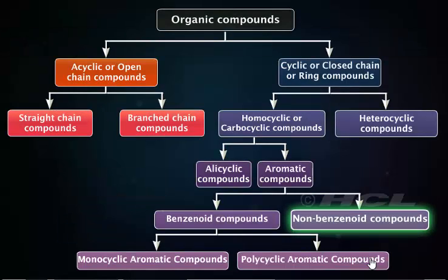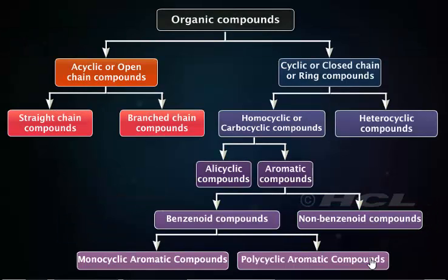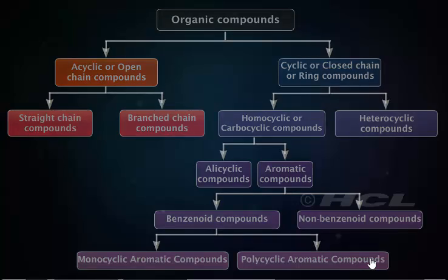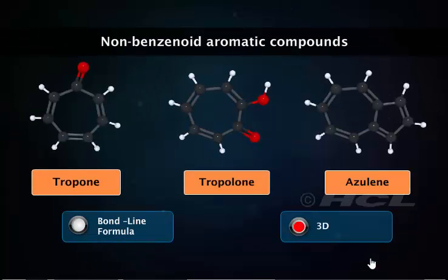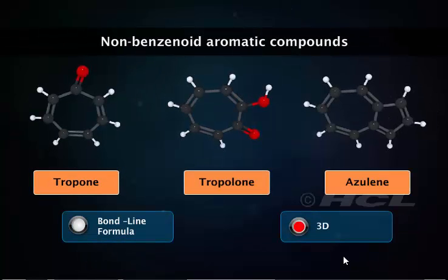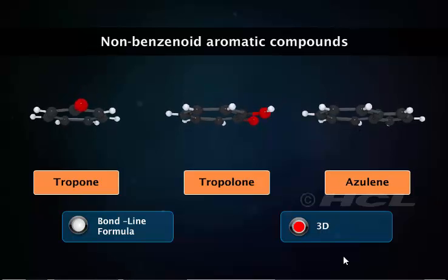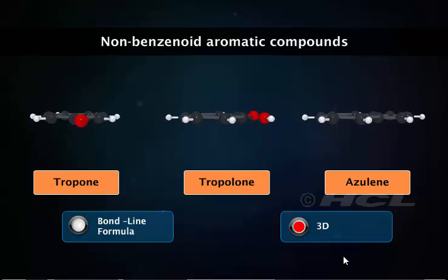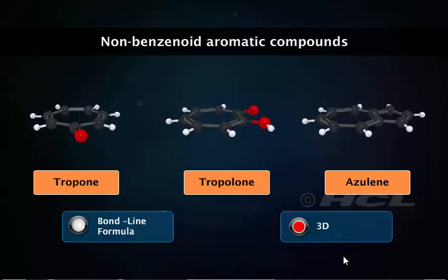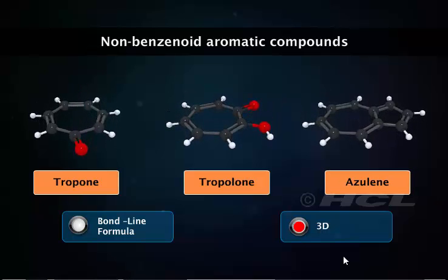The non-benzenoid aromatic compounds do not contain benzene rings. Instead, they have other unsaturated rings. Tropone, tropolone, and azulene are examples of non-benzenoid aromatic compounds.